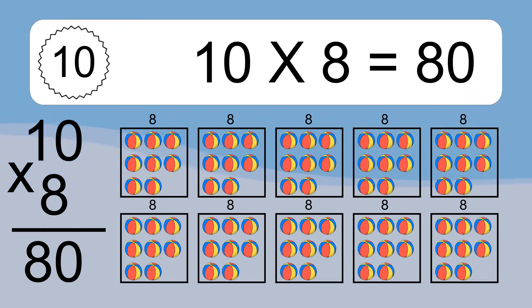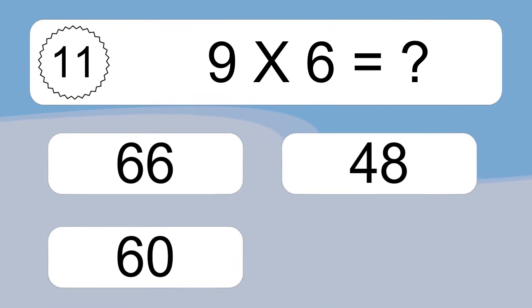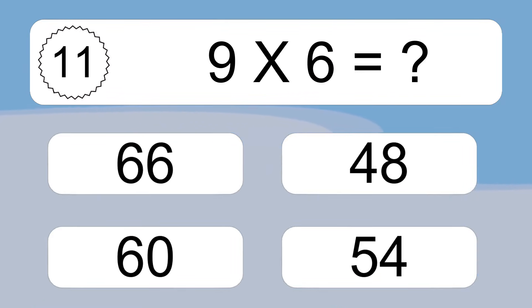10 times 8 equals what? We have 10 boxes, and each box has 8 colorful balls inside. If you count all the balls in all the boxes together, you will have 10 times 8 balls. This equals 80 balls.